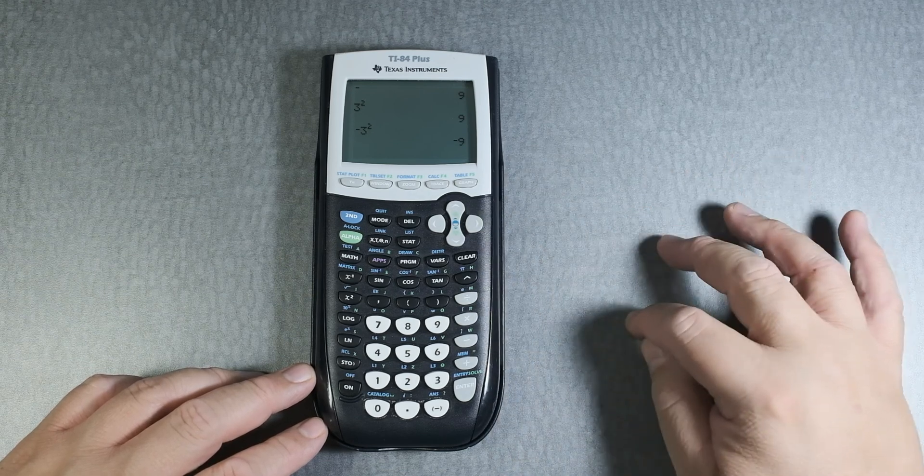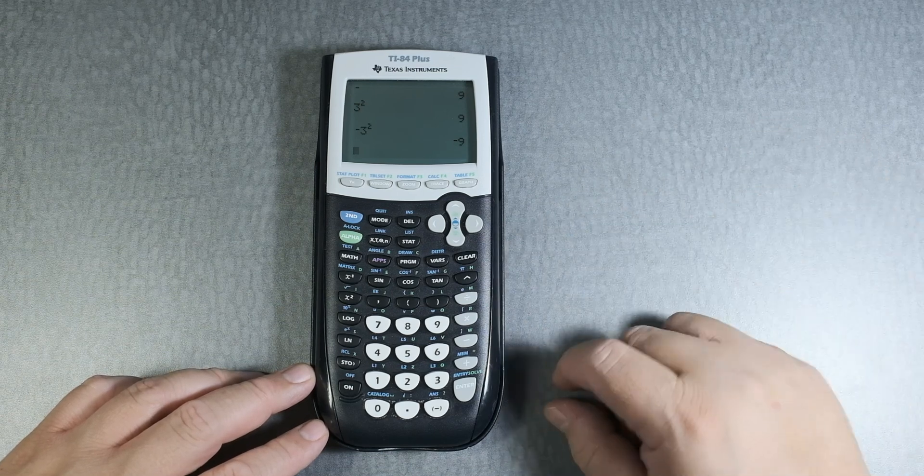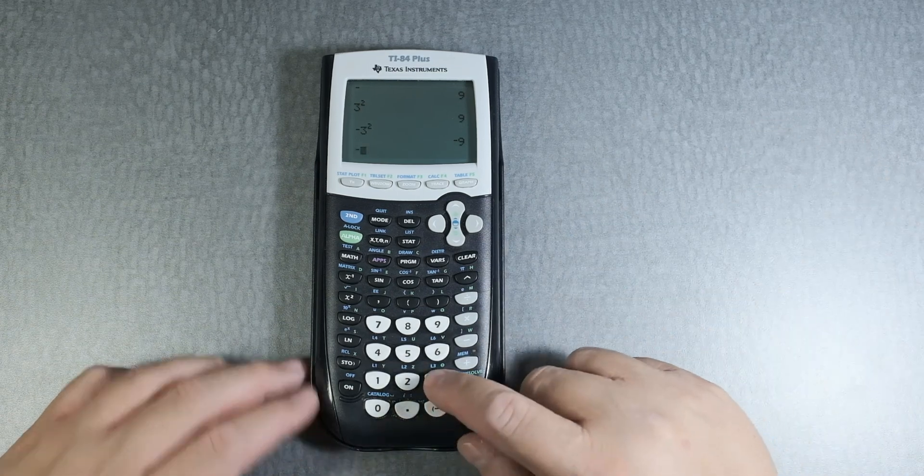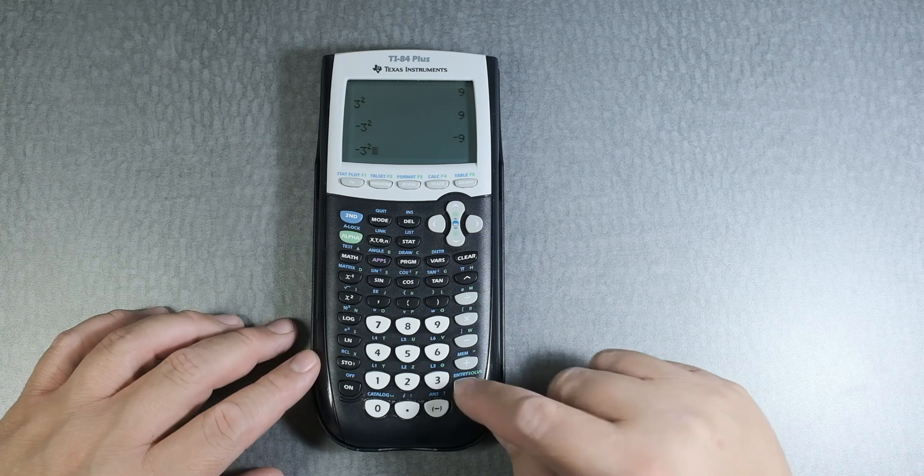It's taking 3 times 3, which gives you 9, then it puts the negative. Same thing with negative 3 and then squared. Same thing.